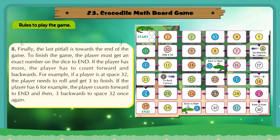For example, if a player is at space 32, the player needs to roll and get 3 to finish. If the player rolls 6, the player counts forward to the end and then 3 backwards to space 32 once again.